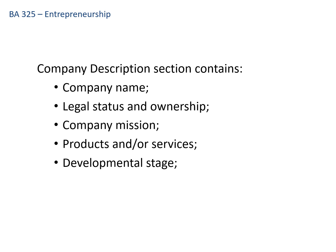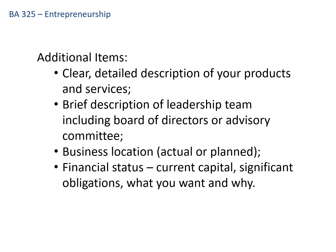The company description section of your business plan will contain your company name, the legal status and ownership, your company mission, an overview of your products or services and what's unique about them, and what stage of development you're at — whether you've already started the business or it's on paper only. You'll also want a clear, detailed description of your products, ideally with a picture or illustration, a brief overview of your leadership team, whether you'll have a board of directors or advisory committee, where you intend to locate your business, and your financial status.